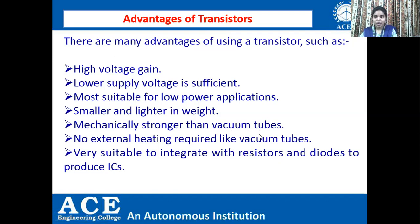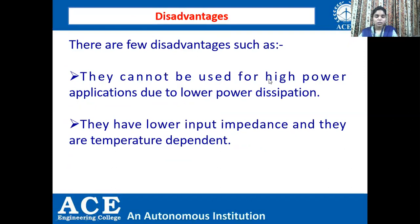Vacuum tubes have been replaced by transistors. No external heating is required like vacuum tubes. Transistors are very suitable to integrate with resistors and diodes to produce ICs. Now let us look into the disadvantages: they cannot be used for high power applications due to lower power dissipation. They have lower input impedance and are temperature dependent.